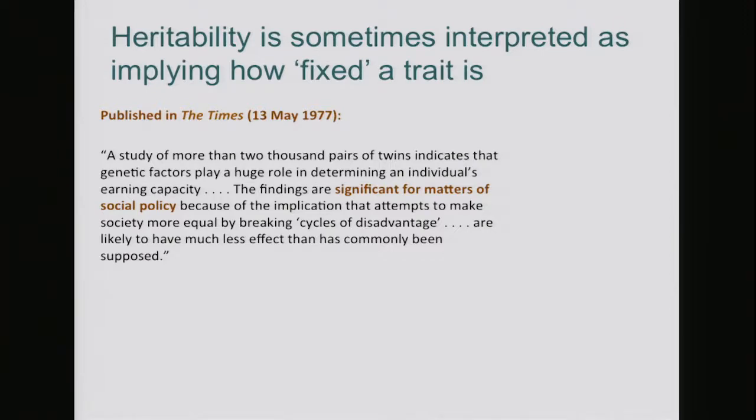The article was about a very large twin study — I think it was a registry-based twin study done in Europe — in which they did a twin study of income levels. What they observed was, not surprisingly, that monozygotic twins were more correlated in their income levels than dizygotic twins, so that income levels were heritable. The study reported a heritability estimate for income level.